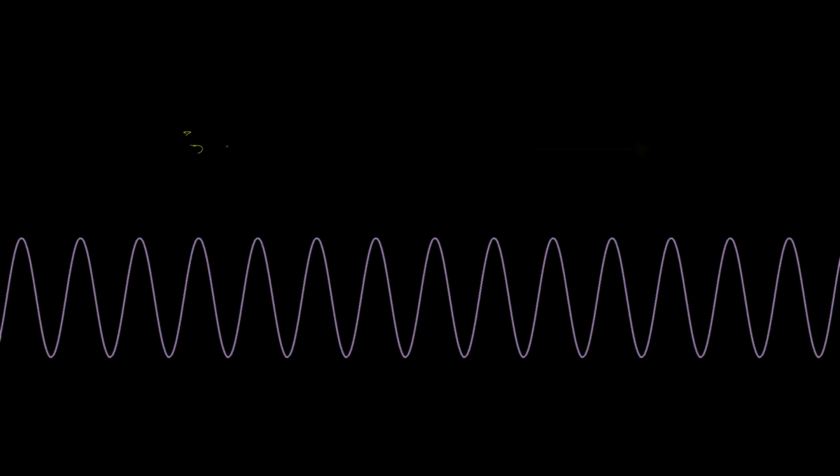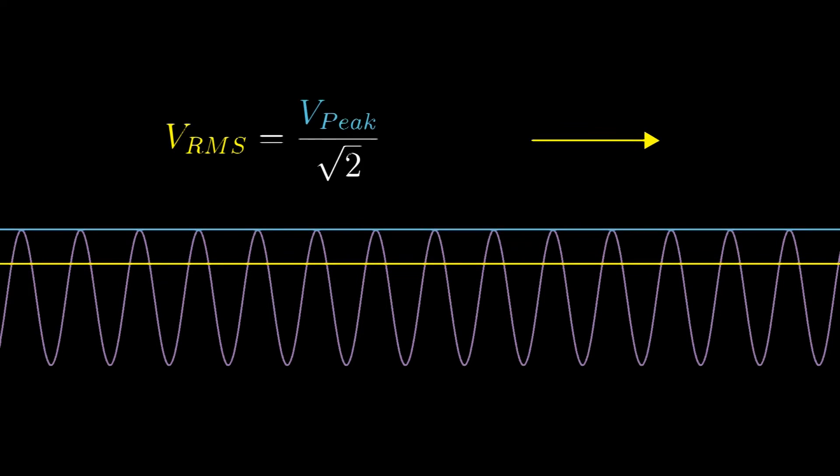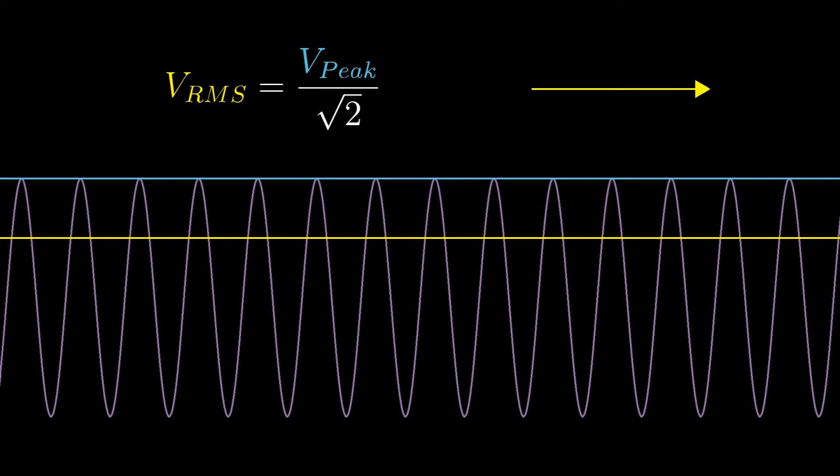For the magnitude of our phasor, we're going to use the root mean squared, RMS. This is a good way to measure the magnitude of a waveform. For a sine wave, the RMS voltage is just the peak voltage divided by root 2. So this will be our magnitude.